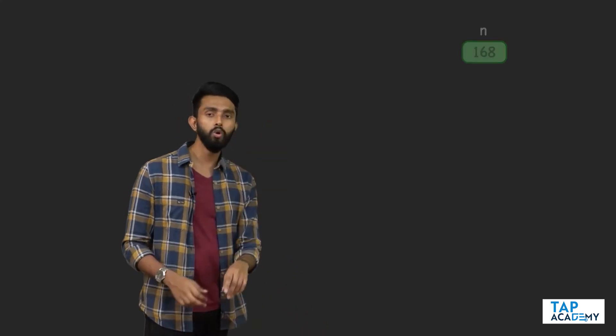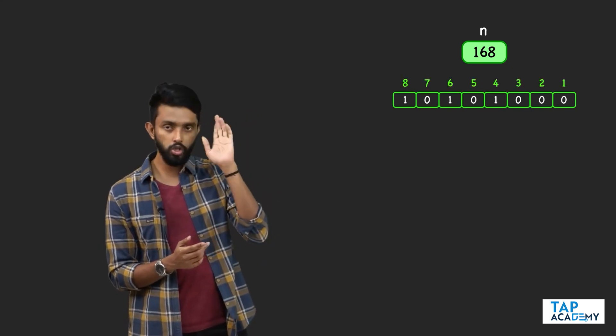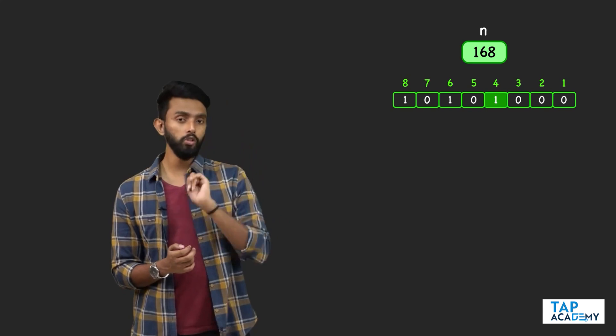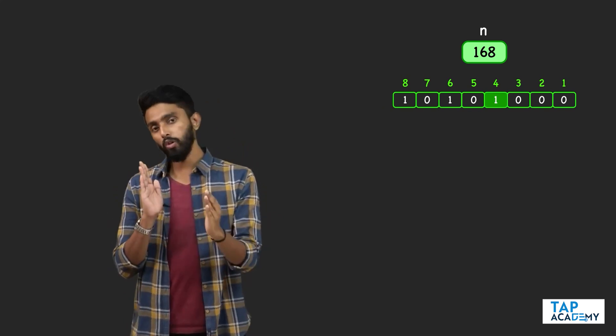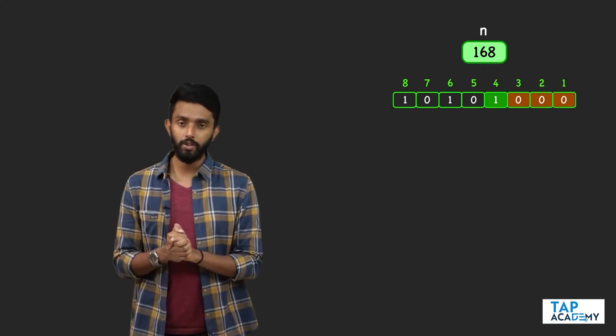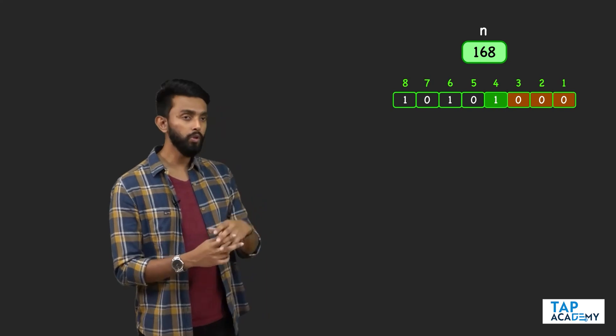Let's assume n is 168. 168 in binary looks like this. I'm putting the position of the bits. The rightmost set bit is the fourth bit. Before the fourth bit there are three zeros. Those are your number of trailing zeros. How would I calculate it? It's very simple.